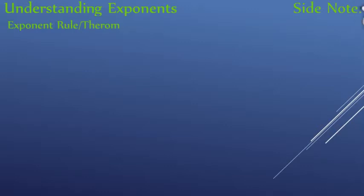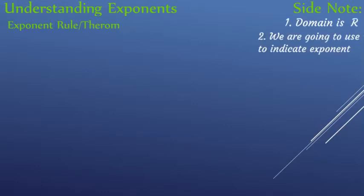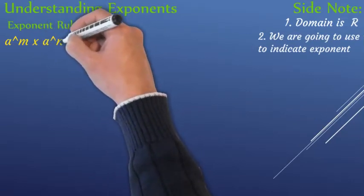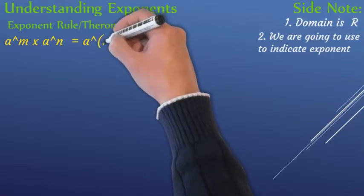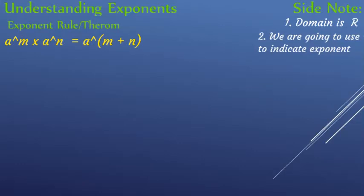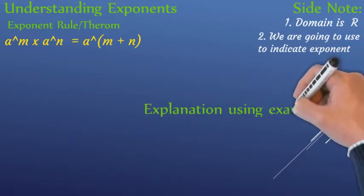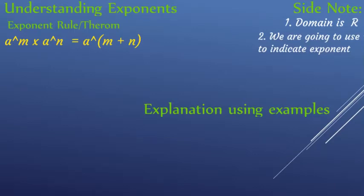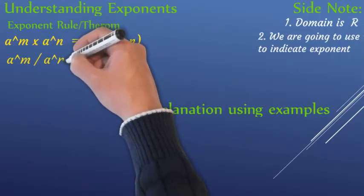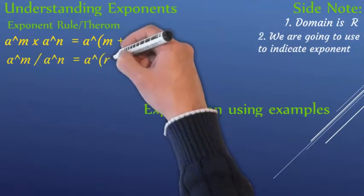We are going to keep the same side note: the domain is a real number, and the caret is our exponent indicator. The rule is: a to the power of m times a to the power of n equals a to the power of m plus n. We are going to explain this rule using an example: a to the power of m divided by a to the power of n.